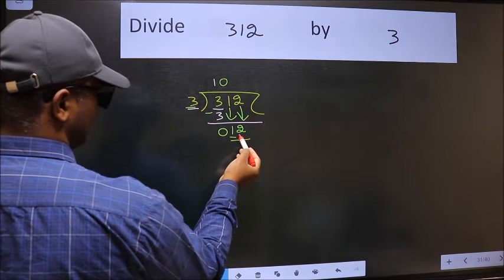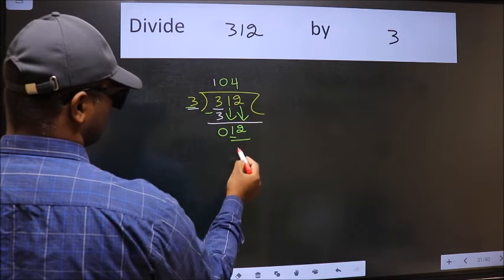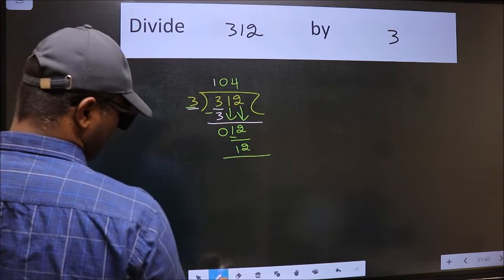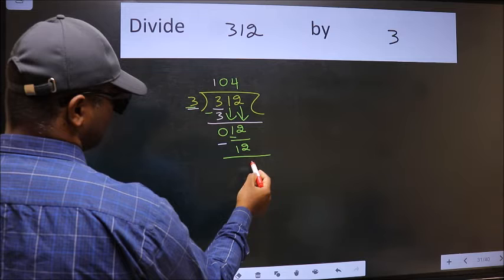Now 12. When do we get 12 in 3 table? 3 fours 12. Now we should subtract. We get 0.